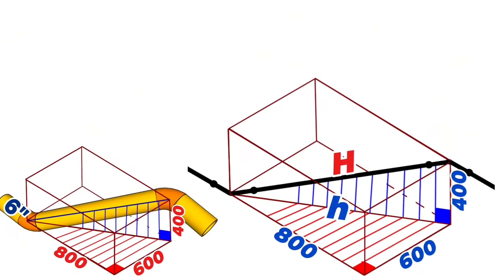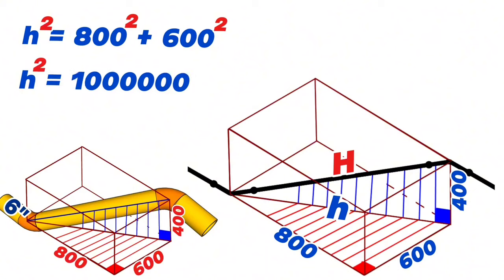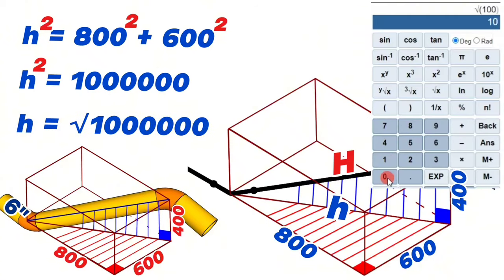The perpendicular sides of the red right-angle triangle are 800 millimeters and 600 millimeters. Using the Pythagorean theorem: small h squared equals 800 squared plus 600 squared. Continuing the calculation, small h squared equals 1,000,000. Taking the square root using a scientific calculator, small h equals 1,000 millimeters.